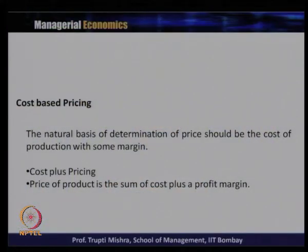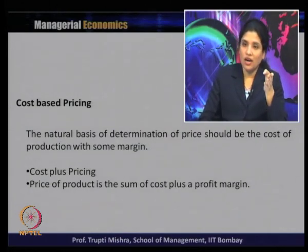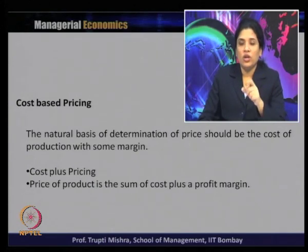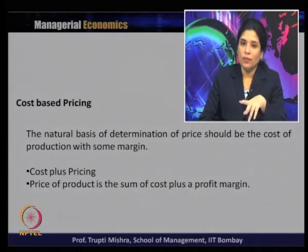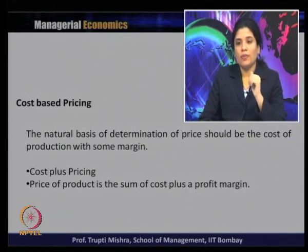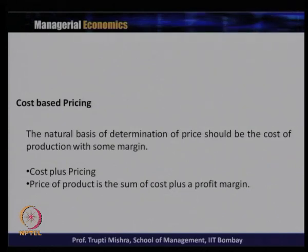In case of cost-based pricing, the basis is cost. The natural basis of determination of price should be the cost of production with some margin. When you find the market price for the product, the first component is the cost of production — what is the cost being incurred to produce the product. The first type is cost plus pricing, where the price of the product is the sum of cost plus a profit margin.